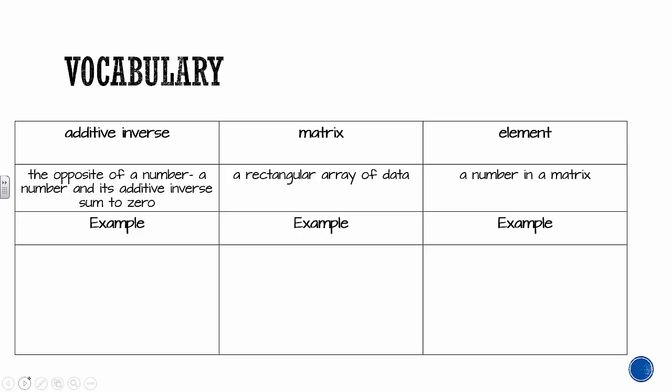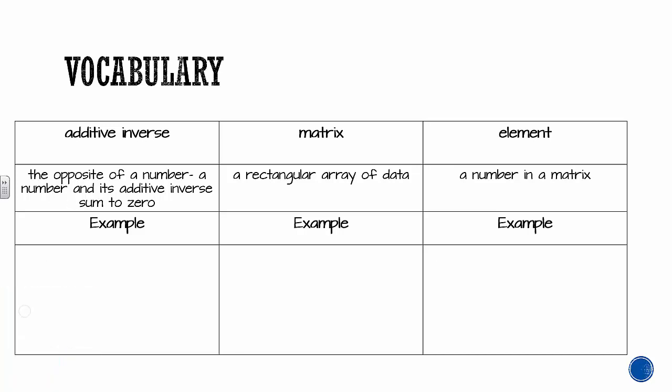Three vocab words for you: additive inverse, matrix, and element. The additive inverse is the opposite of a number — a number and its additive inverse always have to add up to zero. We already know the word 'opposite' — that is the additive inverse of a number. A matrix is totally new.